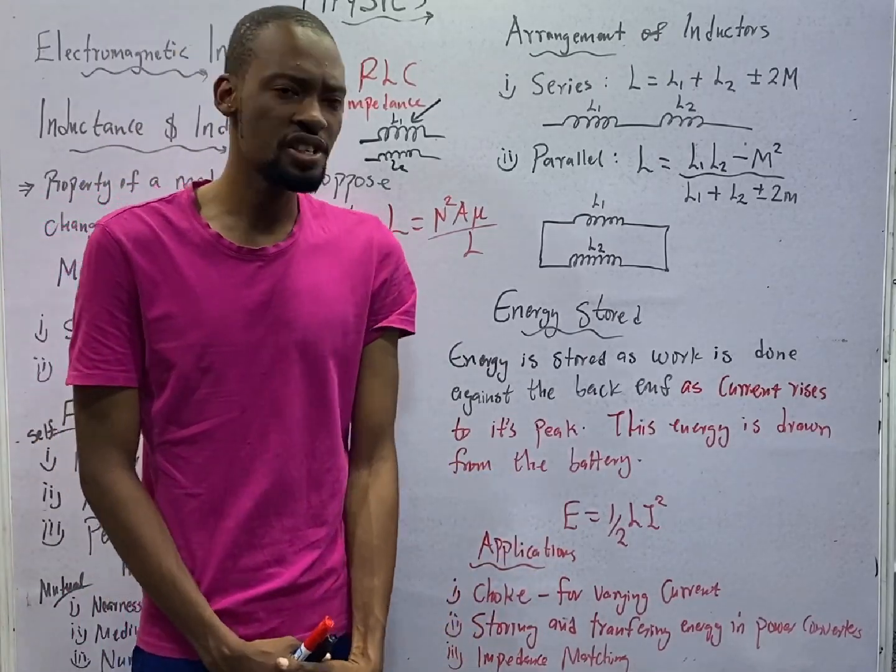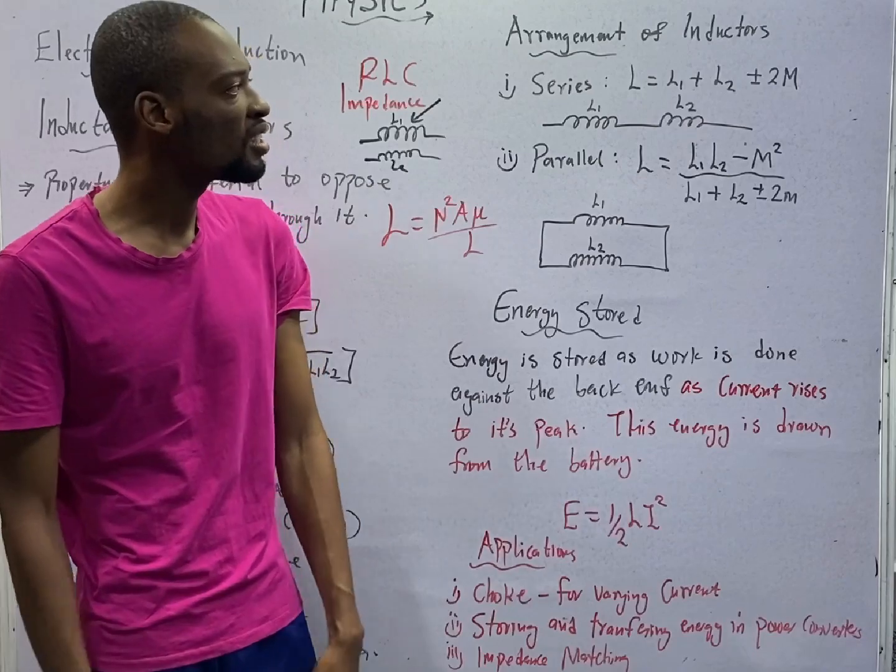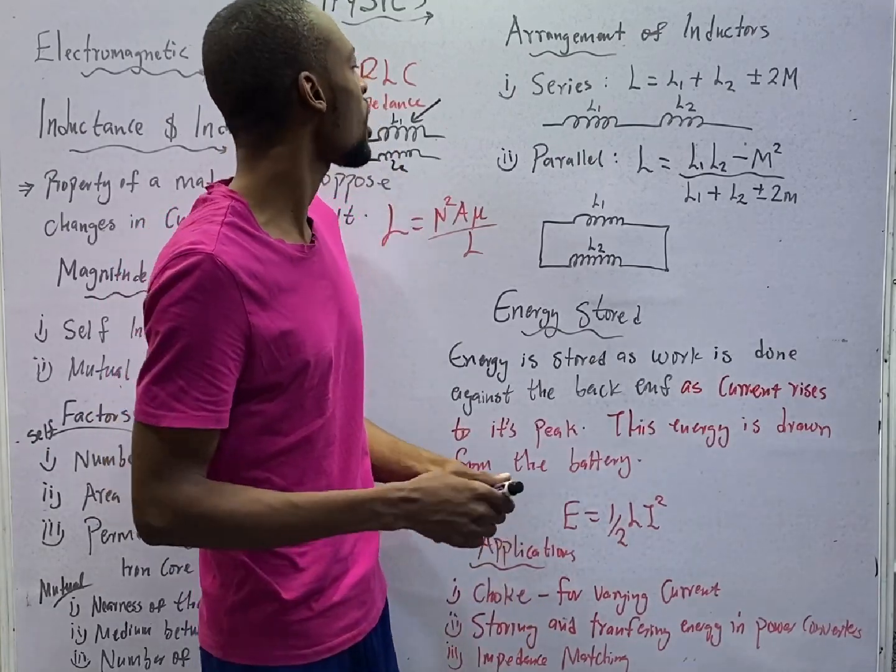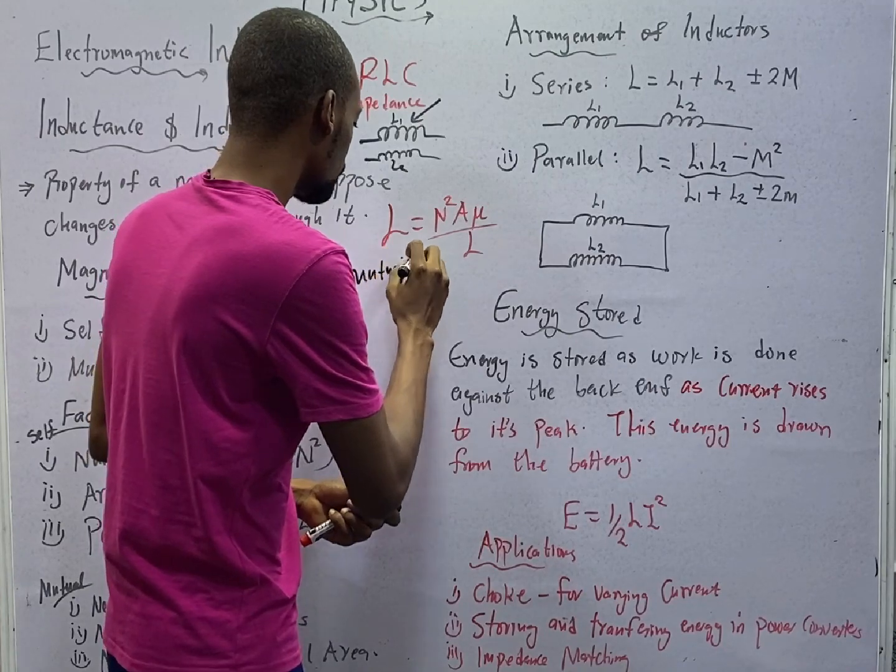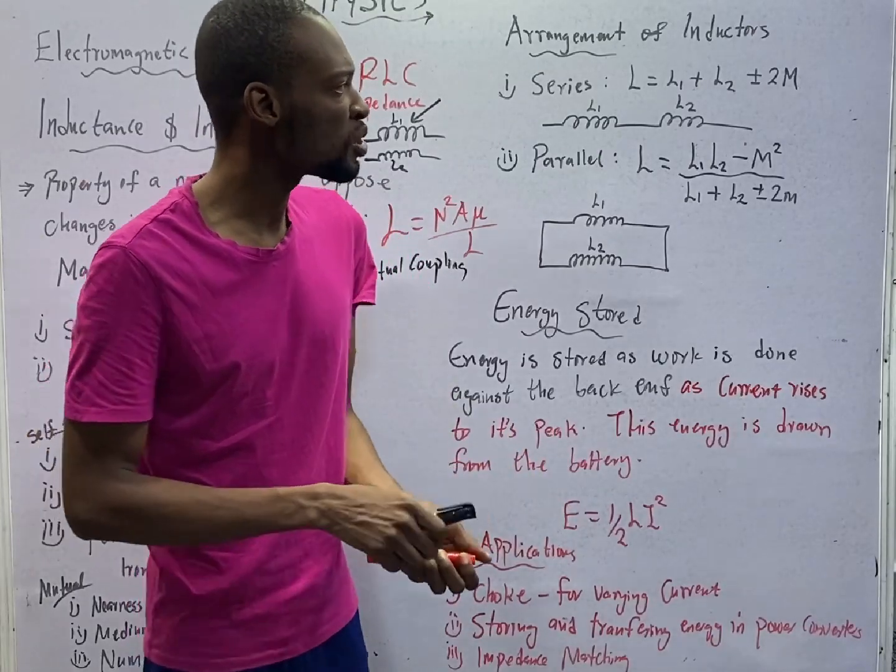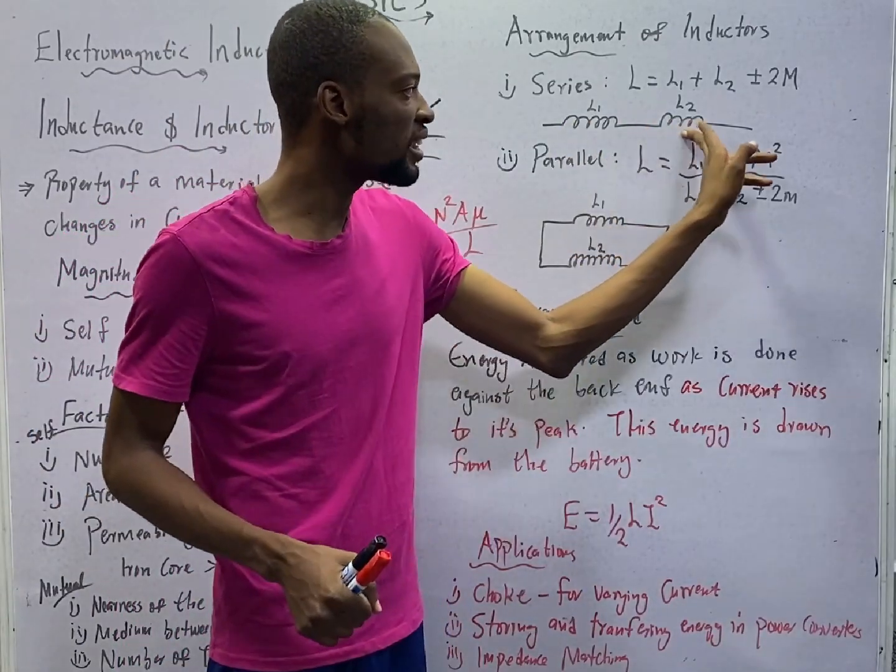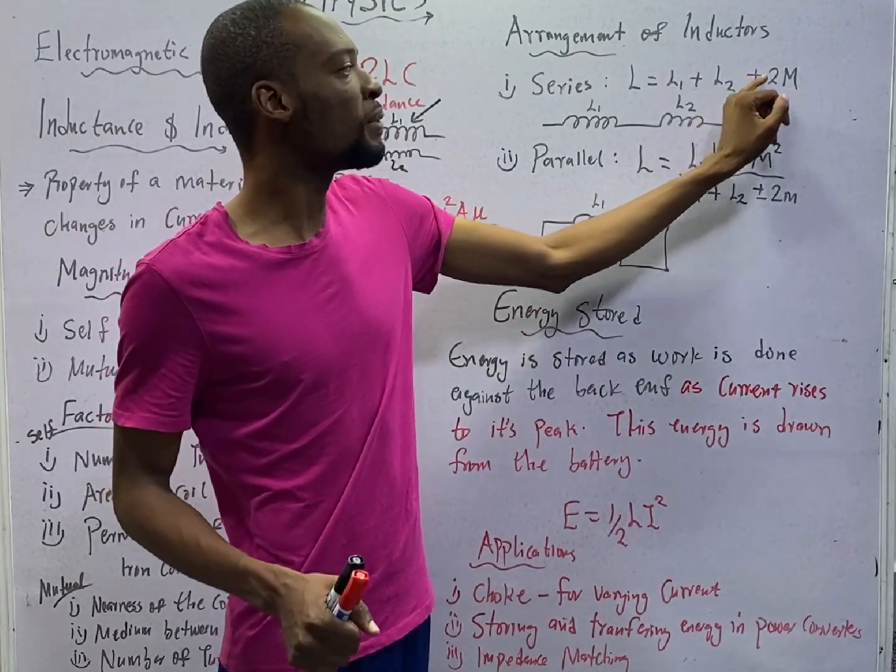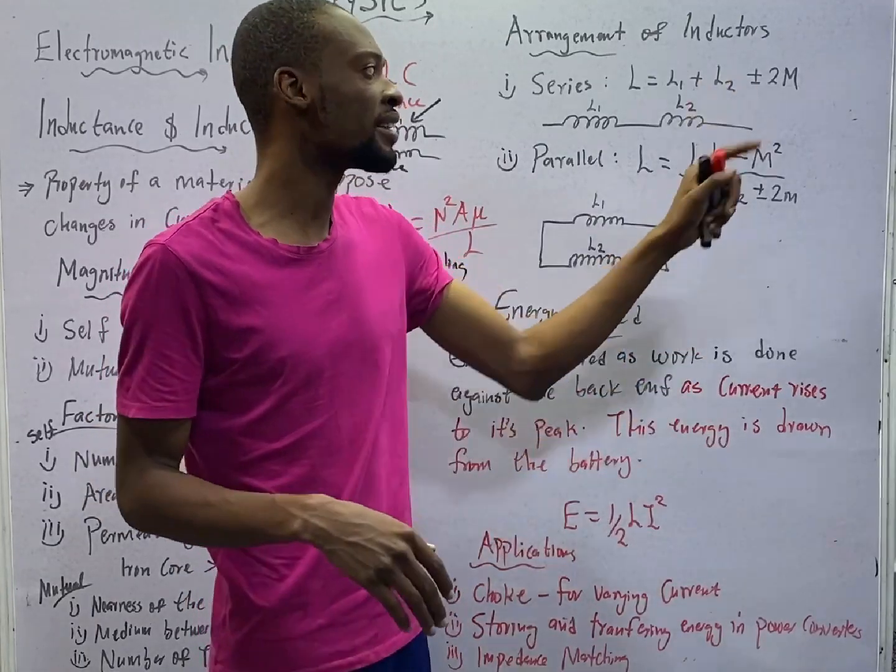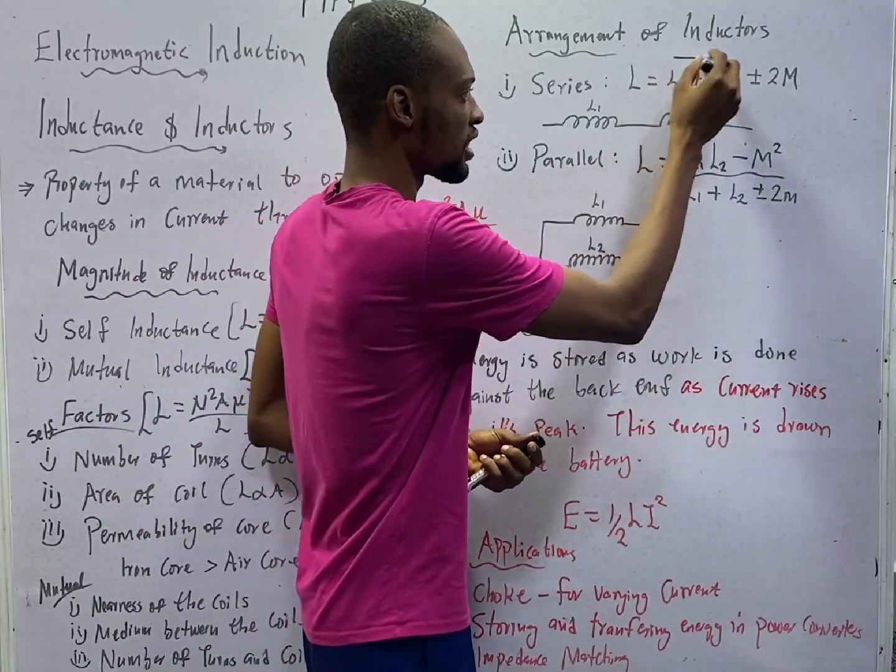Inductors can be arranged in series and in parallel. Once you are arranging inductors in series, just add them. Say, inductor one plus inductor two. Now, look at this. In some cases, they will give you mutual coupling. Most times, you will not be given mutual coupling. So, if you are given two inductors, and they say take the mutual coupling to be this, the total inductance in series will be the first inductor plus the second inductor, then plus or minus two times the mutual coupling you are given. If they are in the same direction according to the question, you add. If they are in different direction, you subtract the mutual coupling. But most times, this is just enough. In series, just add them.